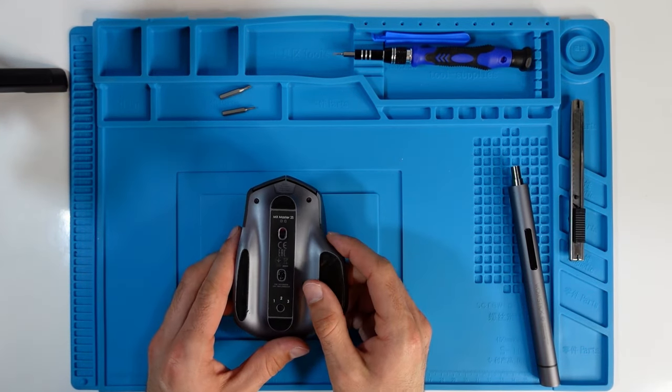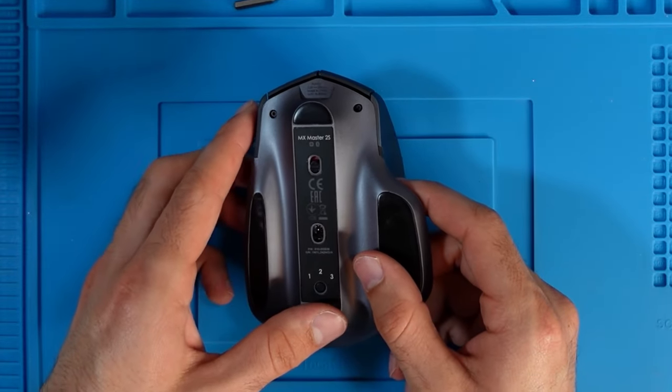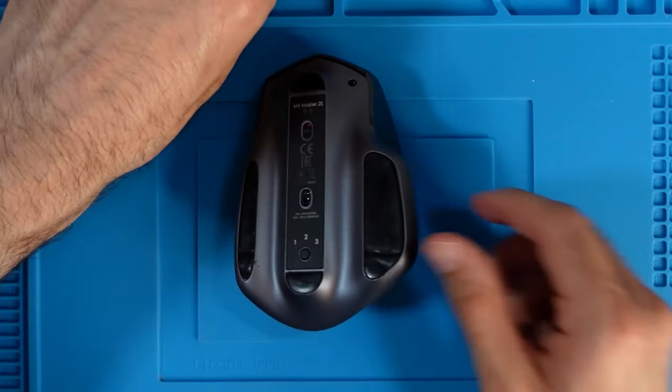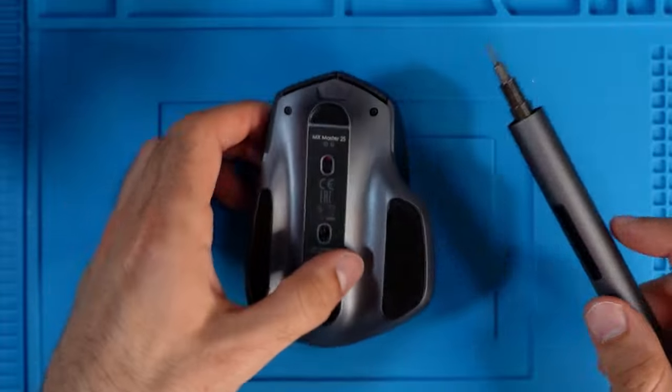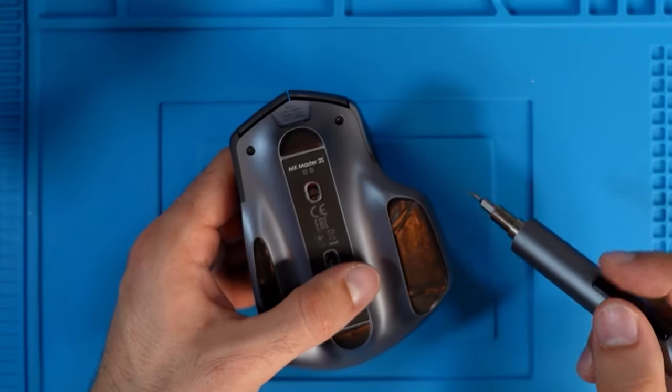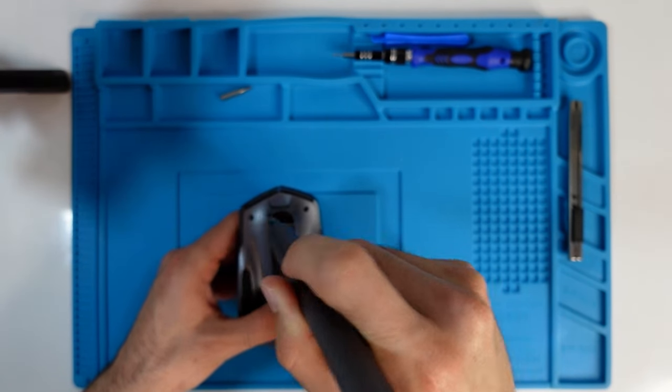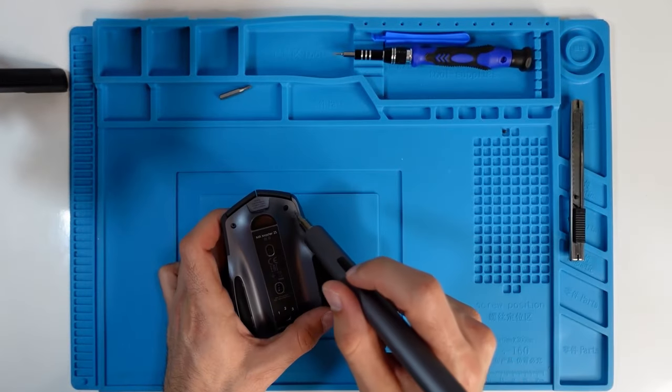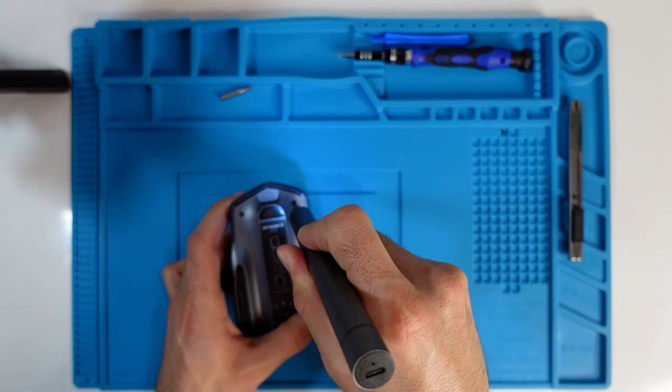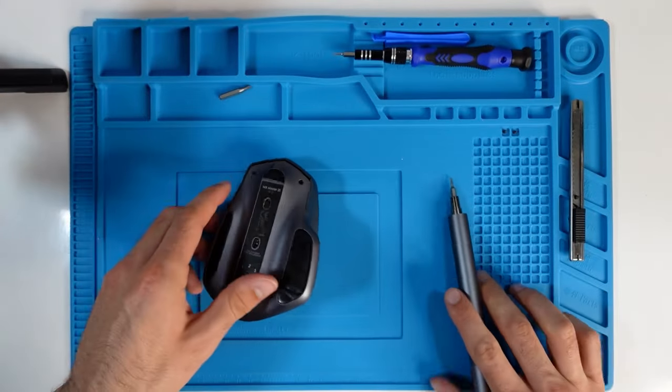You will need to remove these two T5 screws. I'll use my electric screwdriver to do this. This board comes very handy when you have to do these kinds of things, so you can actually put the things aside.